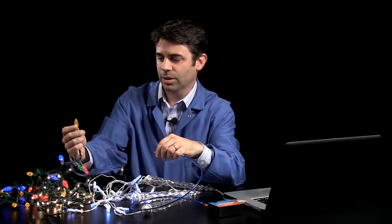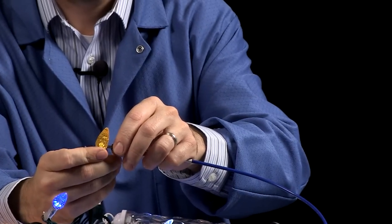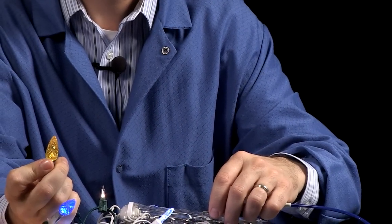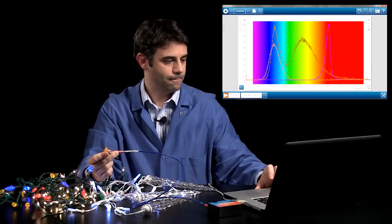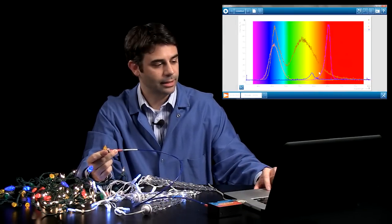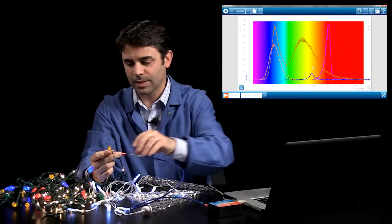And we'll take a look at the yellow and the green also. So here's a yellow LED. Noticeably not as intense and very much in the yellow-orange part of the spectrum, as you would expect.